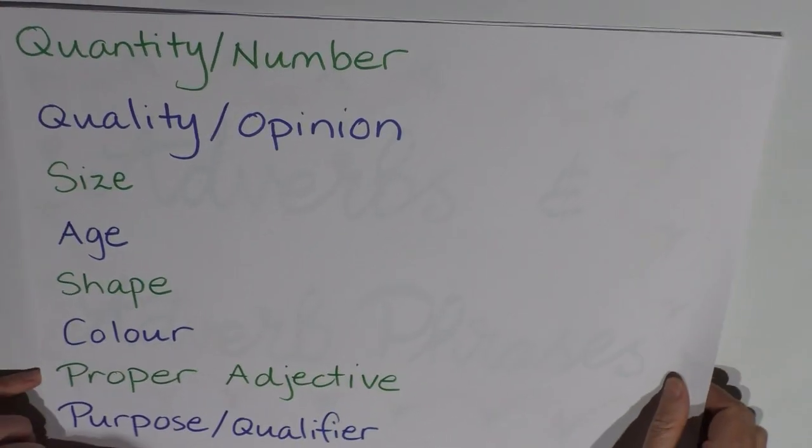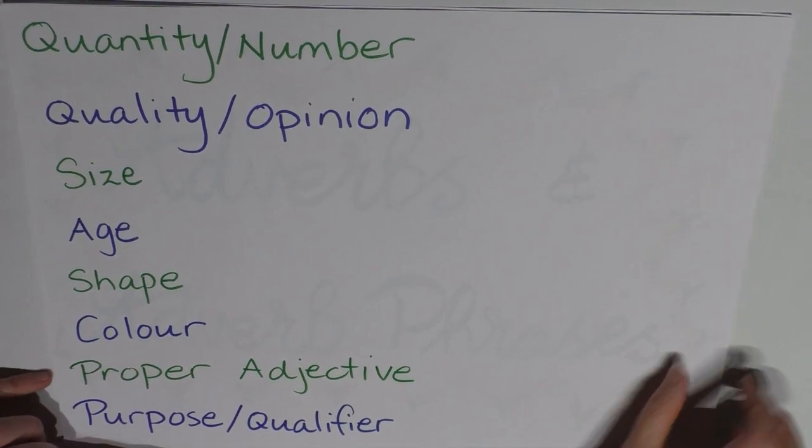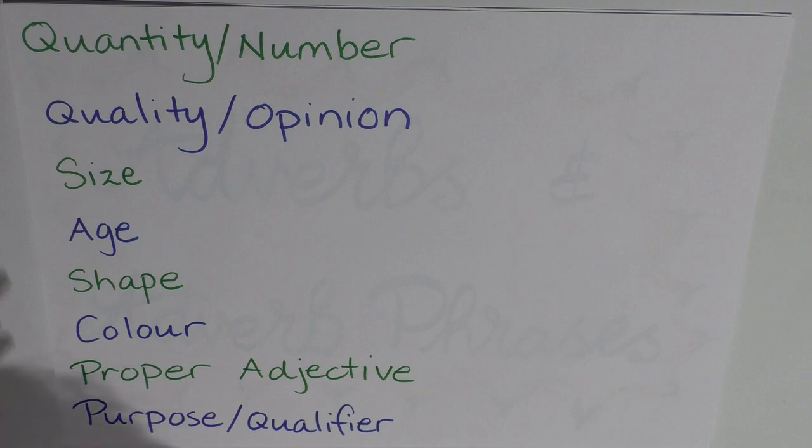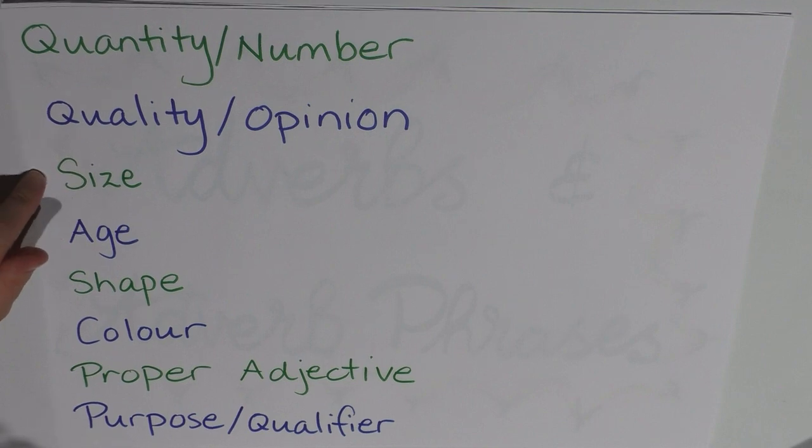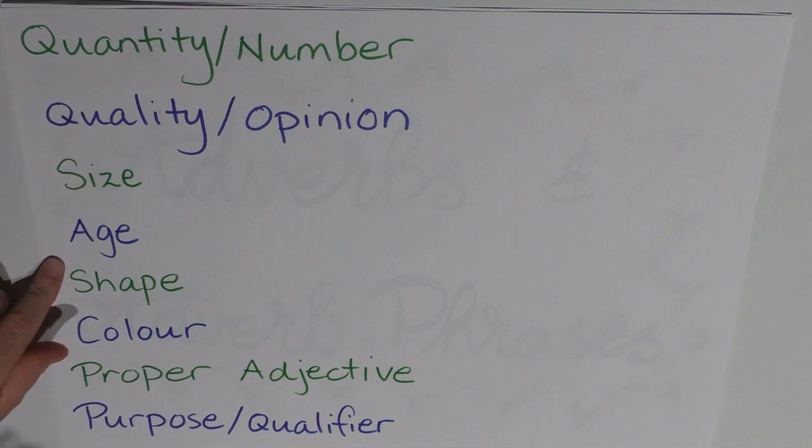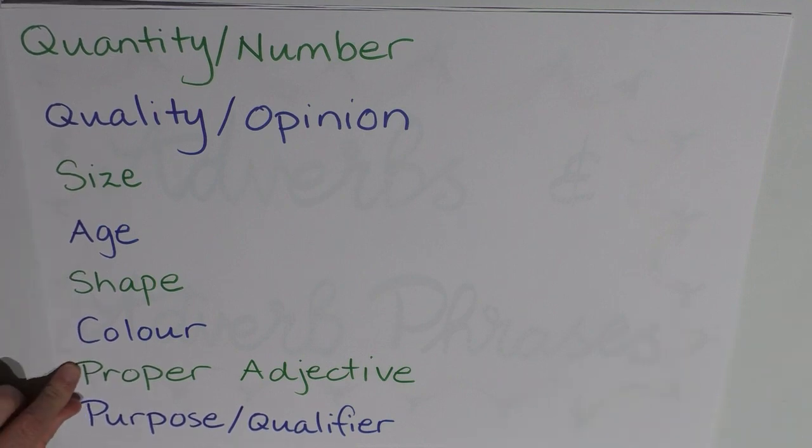And this is the order here, I put them down the side in the order that they're talked about. So we have the quantity or number, like two or three, the quality or opinion, good, size, big, age, old, shape, square, colour, red, proper adjective, Australian, or purpose, or qualifier like that, like musical.